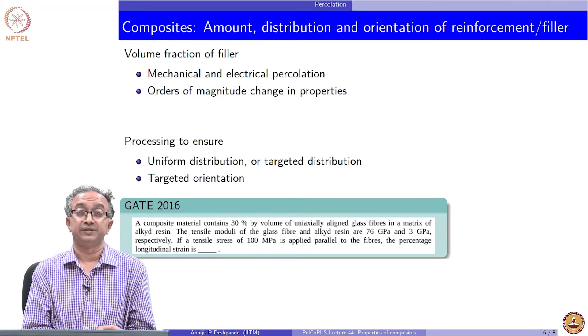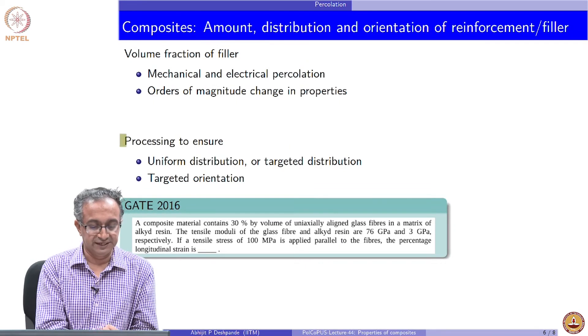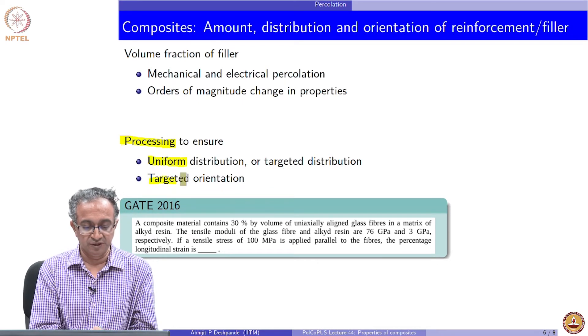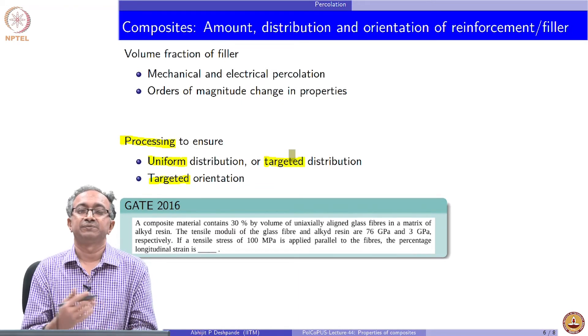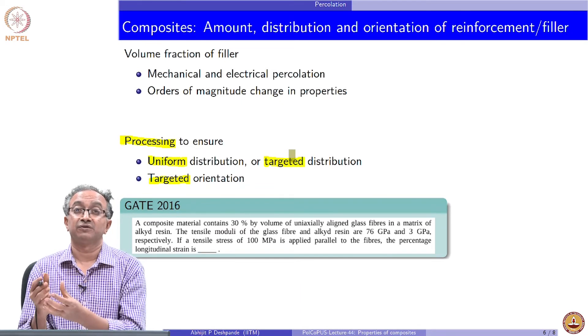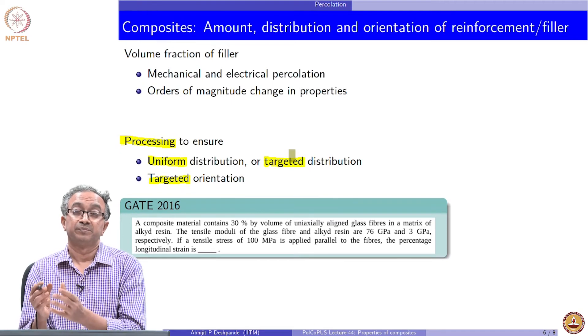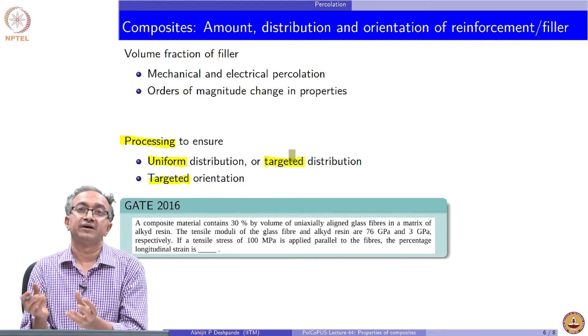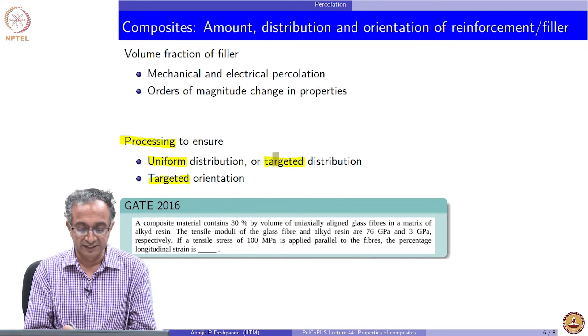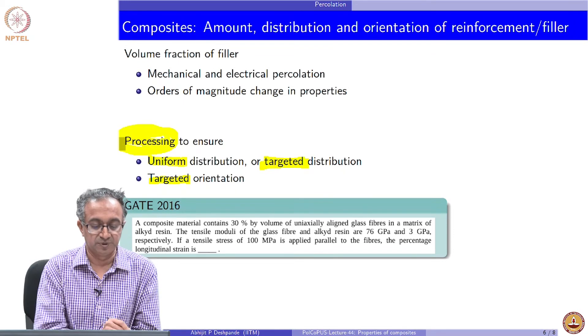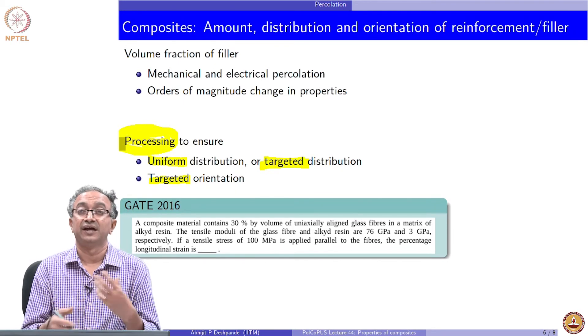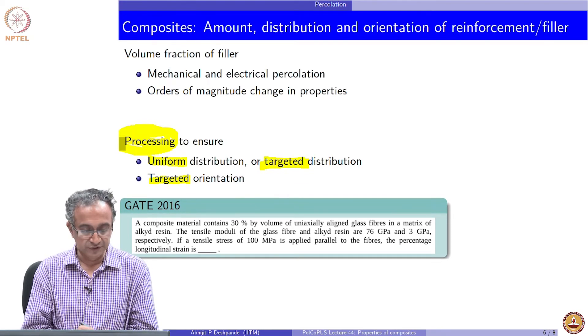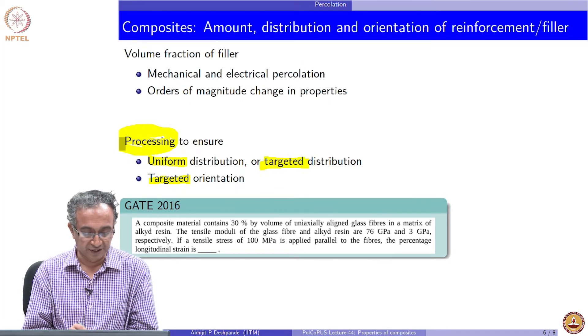The other key therefore is the processing technique has to ensure that we either achieve uniform distribution or a targeted distribution. As I mentioned, if we want a certain part of the polymeric part which is thin and it needs to be strengthened, we can design it in such a way that it may have higher fraction of fibers. But then this target distribution has to be achieved using the processing technique and the flow rates and whatever molding conditions, temperature, pressure we are using.